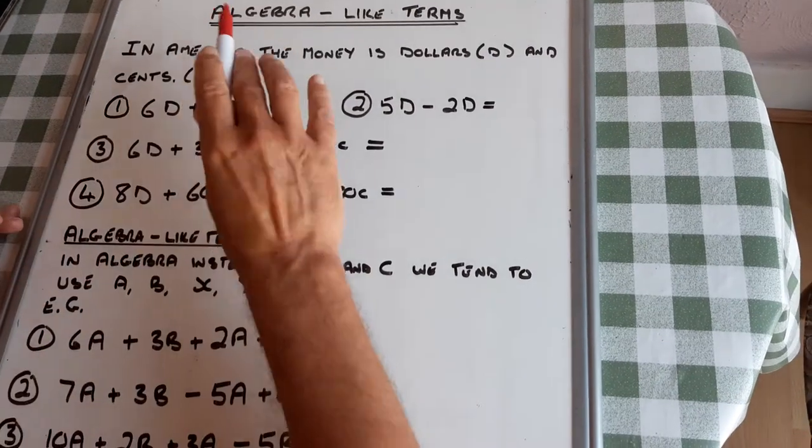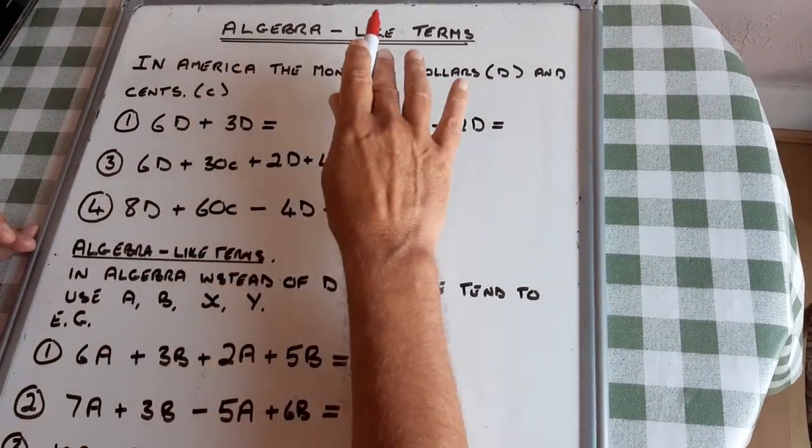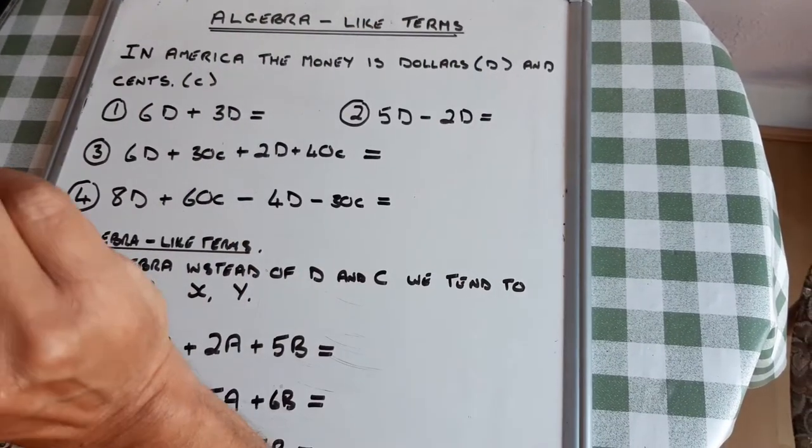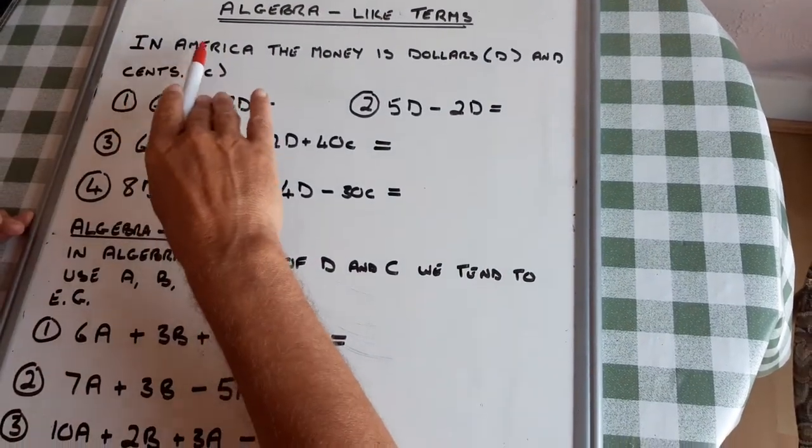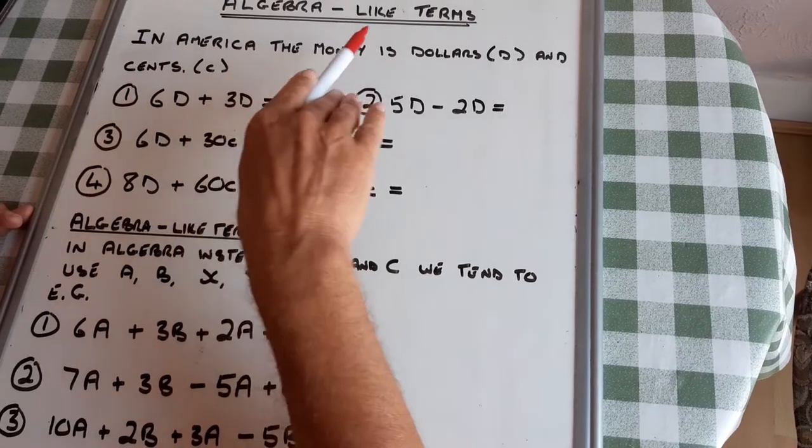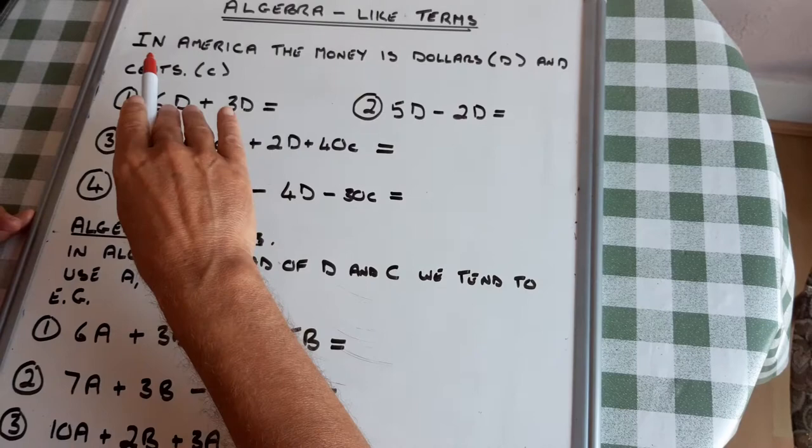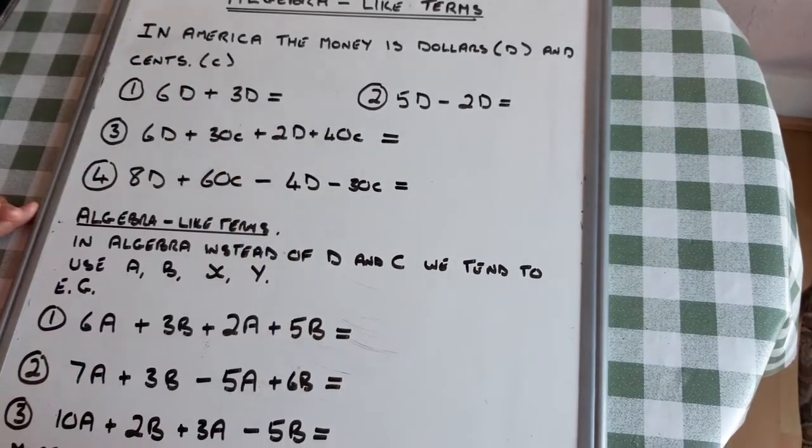Today's lesson is on algebra and what we call collecting like terms. You might think of this, in America, the money is dollars, which I'm going to call D, and cents, which I'm going to call C.